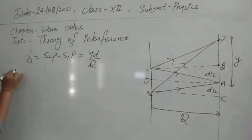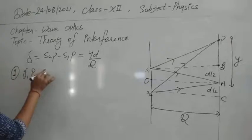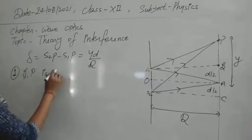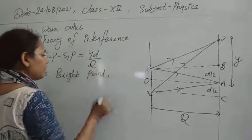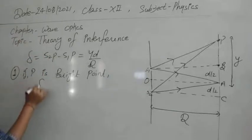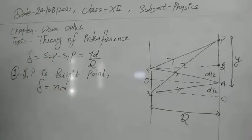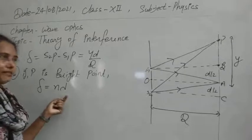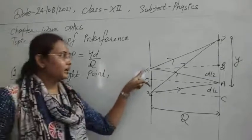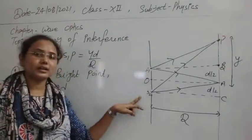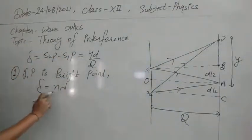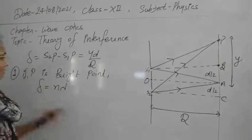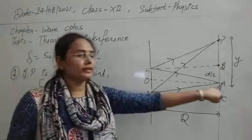Now let's impose the condition of maximum. For a bright point or maximum or constructive interference, we have seen the condition of path difference is n lambda, where lambda is the wavelength of the monochromatic source from which S1 and S2 are created. N can take values 0, 1, 2, 3, 4, but 0 is already for the center point, so N is put as 1, 2, 3, 4 and so on.